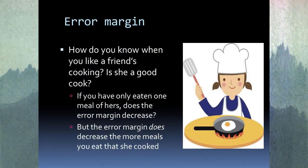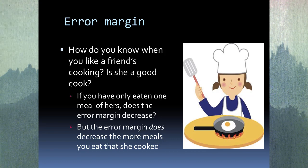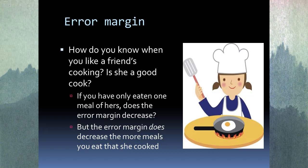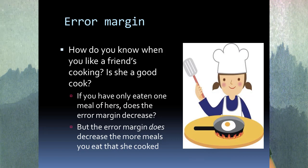Sample arguments are very useful and they help us, but they're not perfect and they can be wrong. We should never forget that inductive reasoning can be wrong. So those are scientific samples. What about everyday samples? We make sample arguments on an everyday basis too. How do you know when a friend is a good cook? If you only had one meal, maybe she got lucky and found a good recipe online — that wouldn't decrease the error margin much.